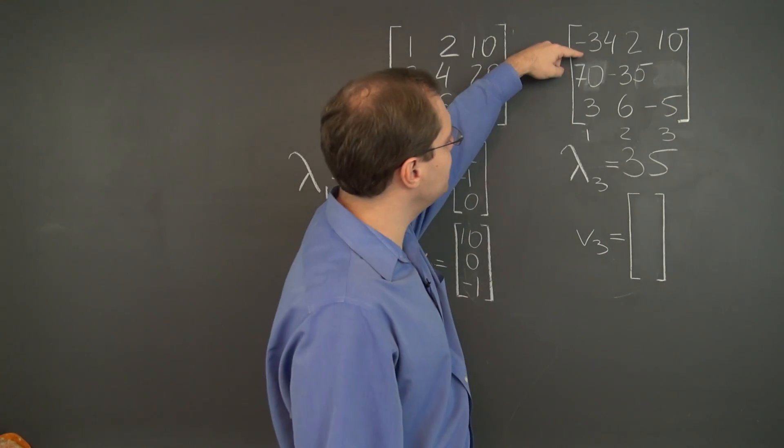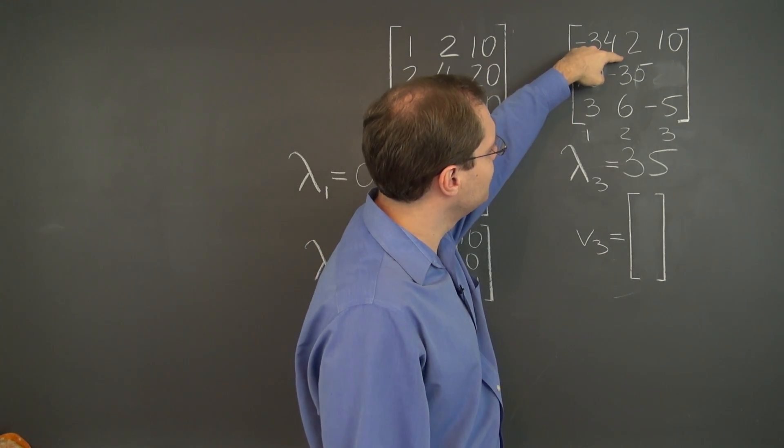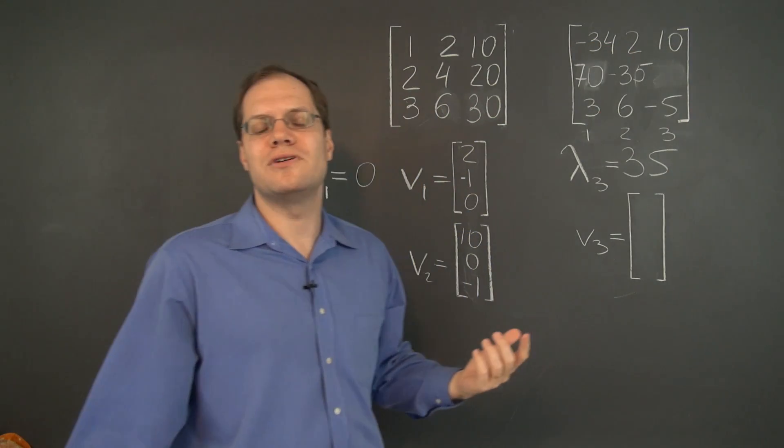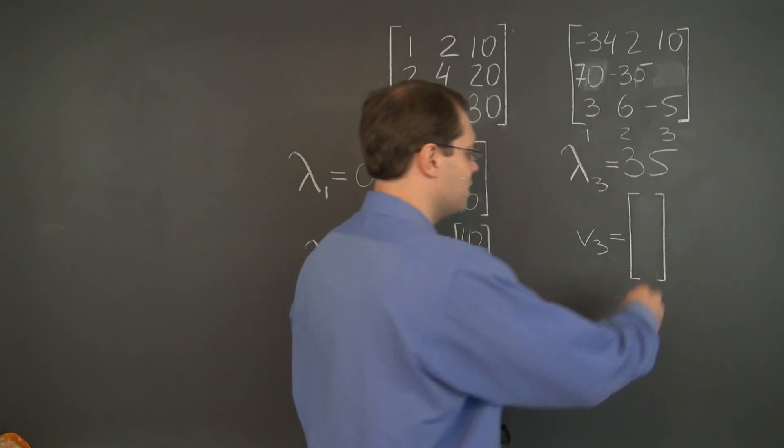All right, let's see if it works here. 30 minus 34 plus 4 plus 30 also equals 0. All right, so 1, 2, 3.